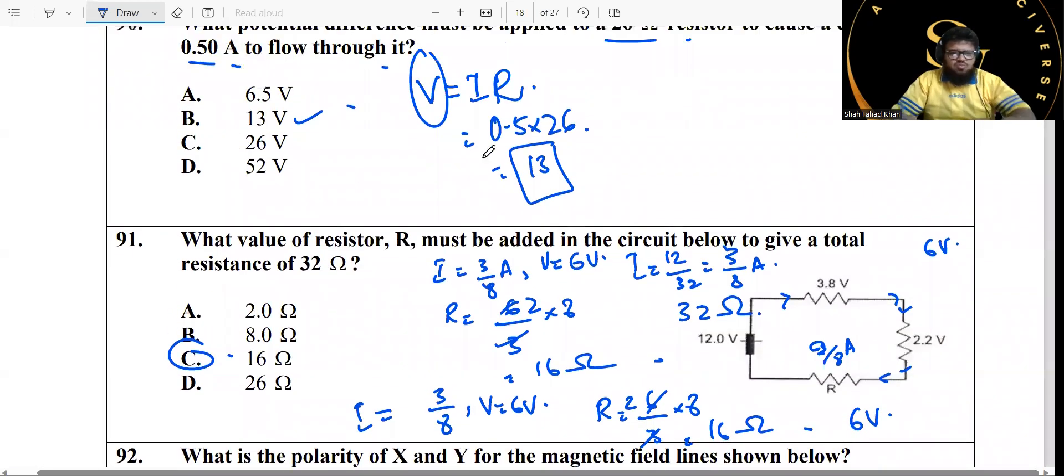Question 91 says: what value of resistor R must be added in this circuit below to give a total resistance of 32 ohms? You have this circuit diagram right over here. You can see the voltages have been split, or this 12 volts has been split across these three. Now if you add these two together it's 6 volts, so this one will be getting 6 volts only. You need to find out the resistance. To find out the resistance, we already know the potential difference, we need to find out the current.